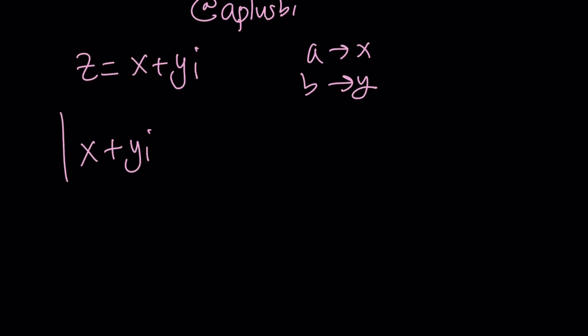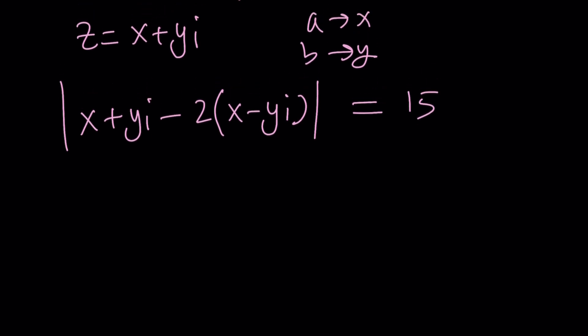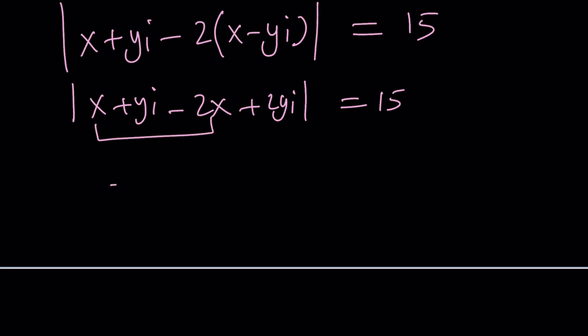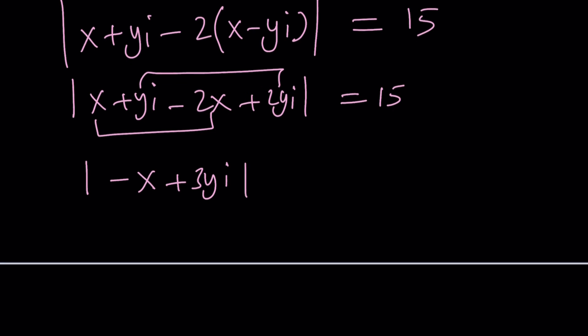So we get |x + yi - 2(x - yi)| = 15. By using the definition of absolute value, we can first simplify this expression. We're going to put together real parts and imaginary parts. We get x + yi - 2x + 2yi, which gives us -x + 3yi = 15.